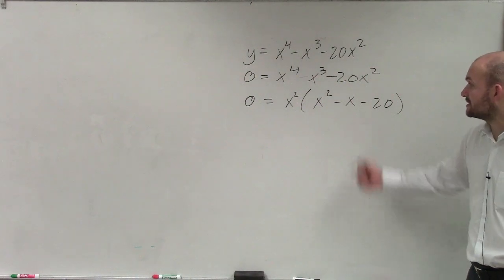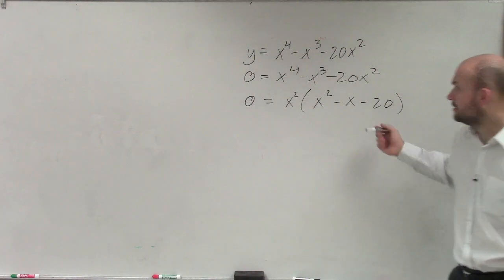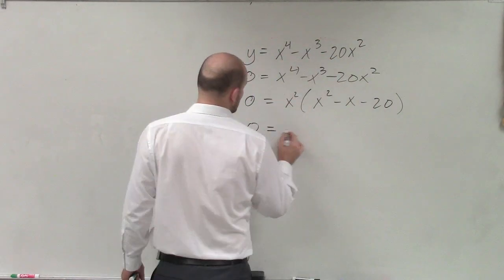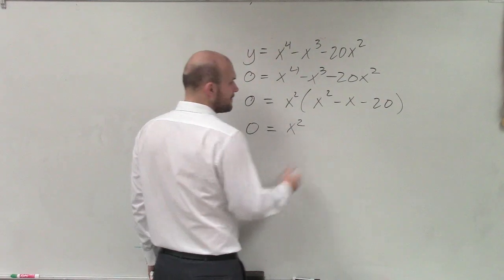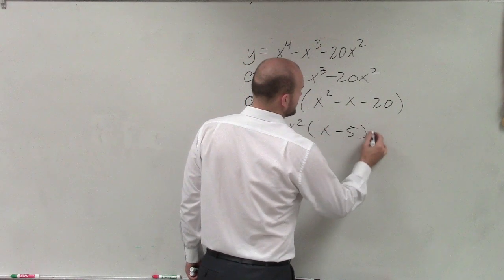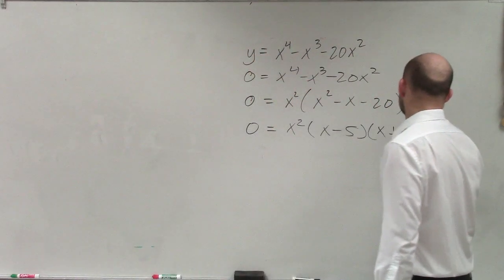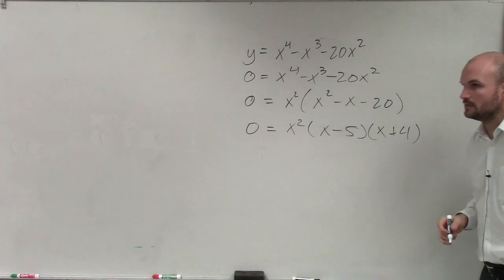Now we have another trinomial we can factor. Factoring this gives 0 = x²(x - 5)(x + 4).